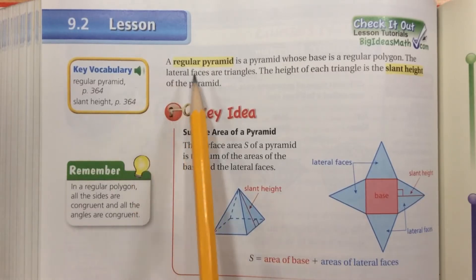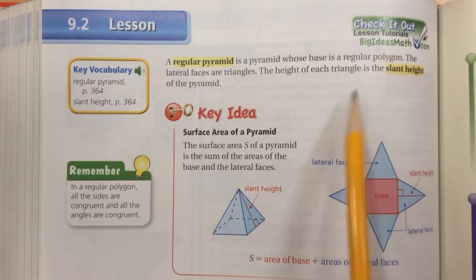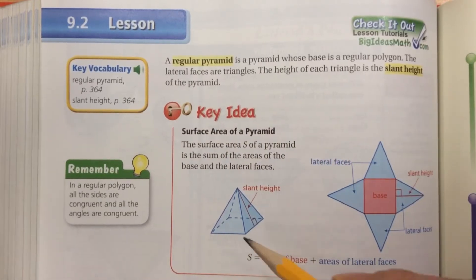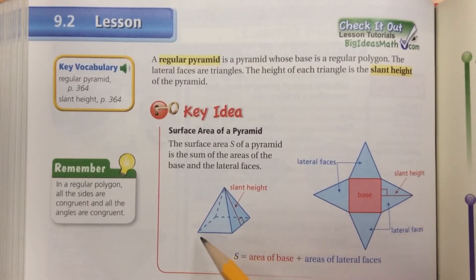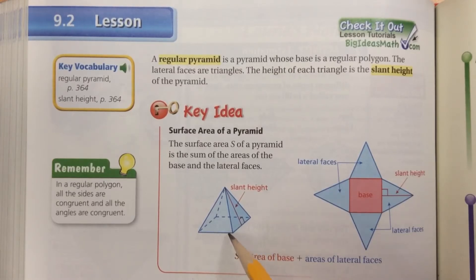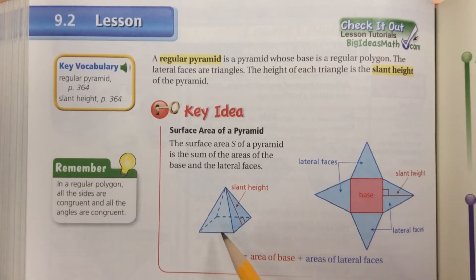A regular pyramid is a pyramid whose base is a regular polygon. We will only deal with regular pyramids because we only want regular bases — regular means that all of the sides on the base are congruent, as are all of the angles. So this shape at the bottom is a square, because a square is a regular quadrilateral.